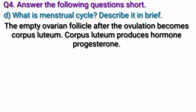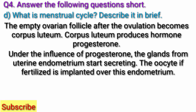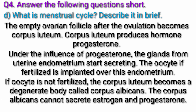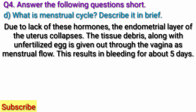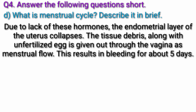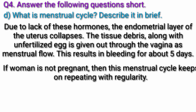This process is called ovulation. The empty ovarian follicle after ovulation becomes corpus luteum. Corpus luteum produces the hormone progesterone. Under the influence of progesterone, the glands from the uterine endometrium start secreting. This oocyte, if fertilized, is implanted over this endometrium. If the oocyte is not fertilized, the corpus luteum becomes a degenerate body called corpus albicans. Corpus albicans cannot secrete estrogen and progesterone. Due to lack of these hormones, the endometrial layer of the uterus collapses. The tissue debris along with the unfertilized egg is given out through the vagina as menstrual flow. This results in bleeding for about 5 days. If the woman is not pregnant, this menstrual cycle keeps on repeating with regularity.